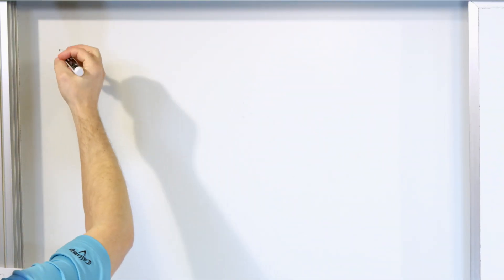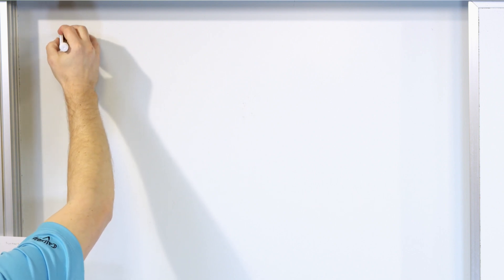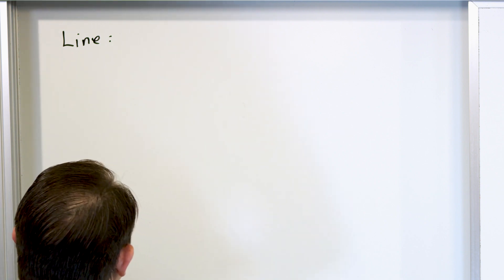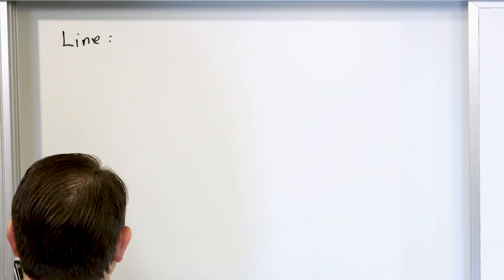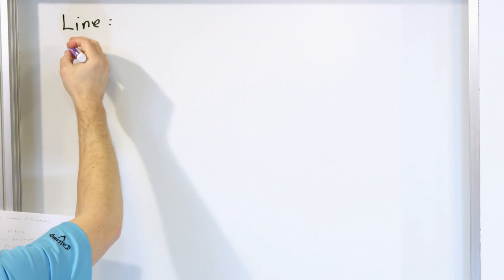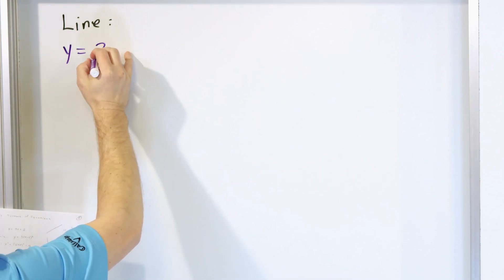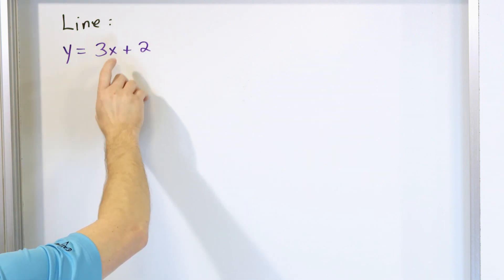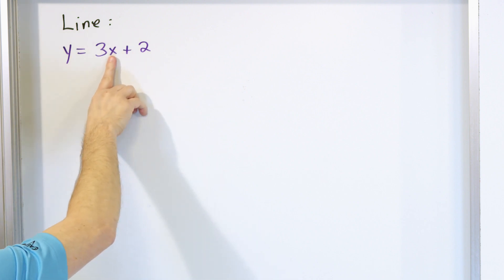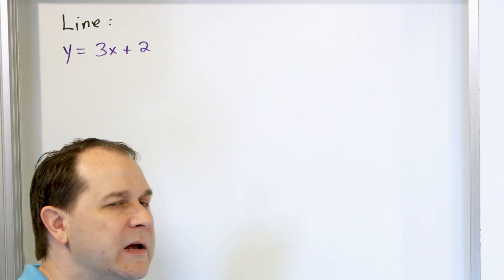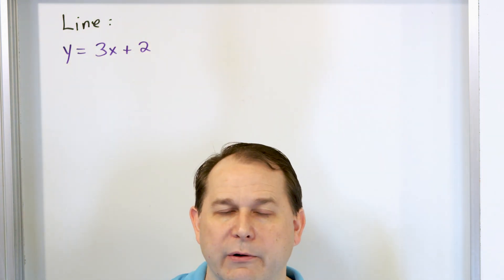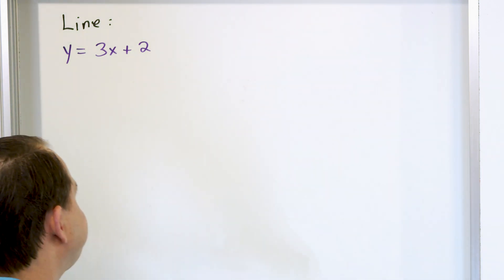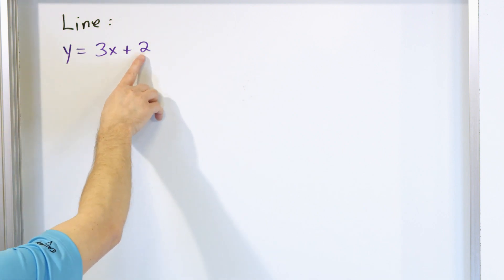Let's recall things we already know. We already know there's a line. What is the general equation of a line? A line might be something like y = 3x + 2. How do you know it's a line? Because the x term does not have a square or any other higher power. If the x and y variables don't have any squares or higher powers, then it has to be a line. This is the y-intercept, and this is the slope.